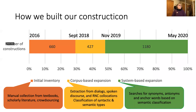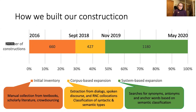Looking back, we see that building our Constructicon took place in three phases. At first we were just grabbing constructions from places where they were easy to harvest, like textbooks and scholarly literature. We did a certain amount of crowdsourcing, up to about 660 constructions. After that we went to corpus-based expansion, where we looked at what sorts of multi-word expressions are recognized in the Russian National Corpus and other corpus materials. In the course of two or three years, we got up to a little over a thousand constructions.